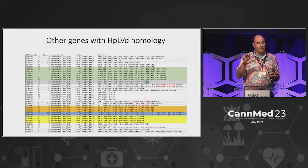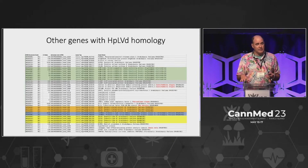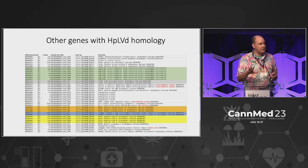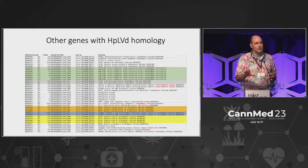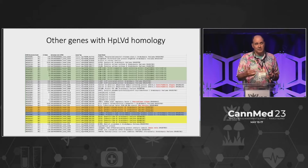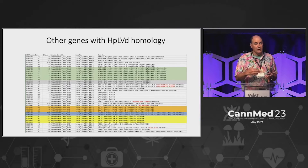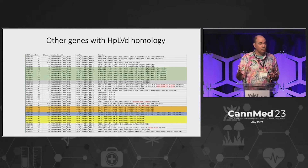If you take everything that we found that are 17 bases and higher, there are 25 genes in the cannabis genome that this has homology to and may have some down-regulation impact on. So we set out to measure that.